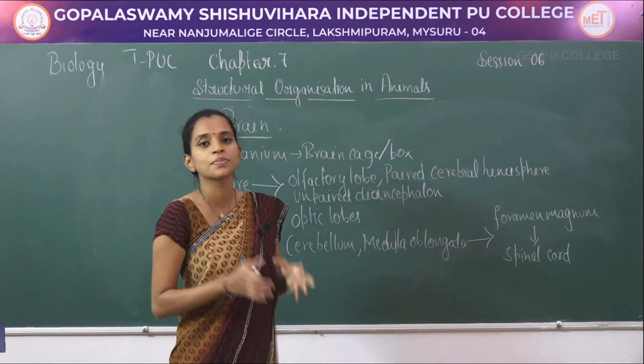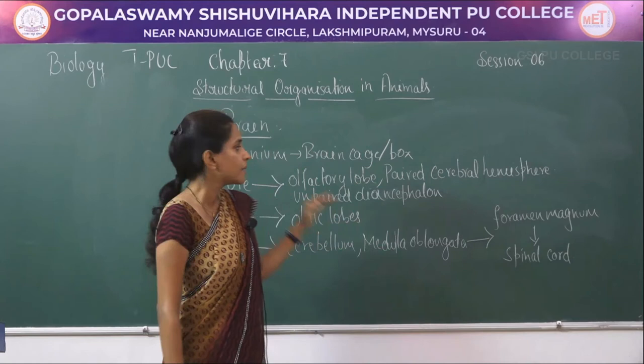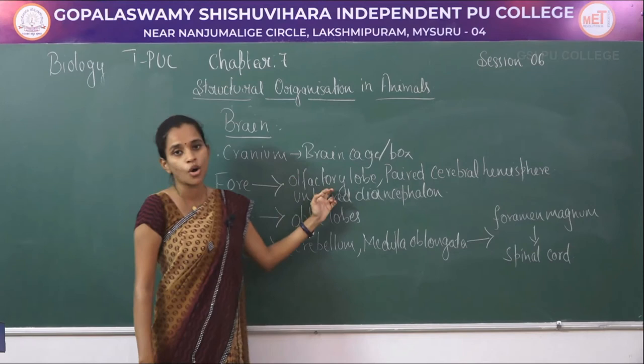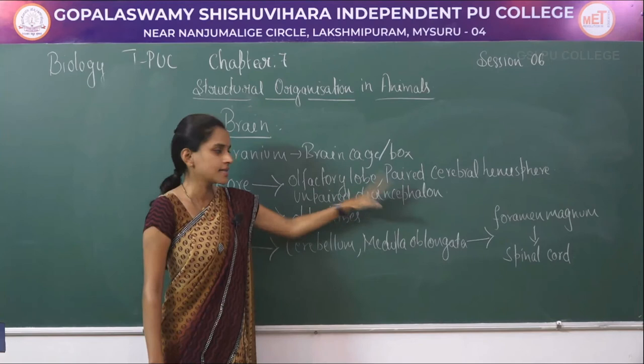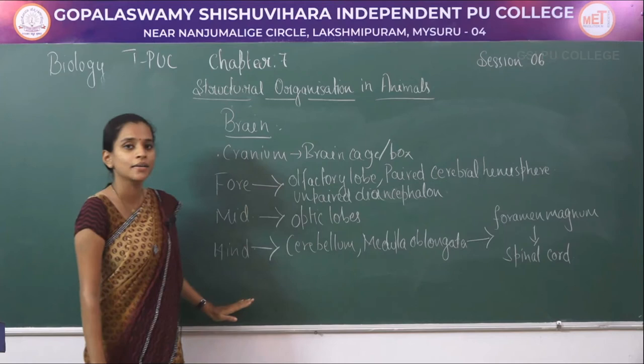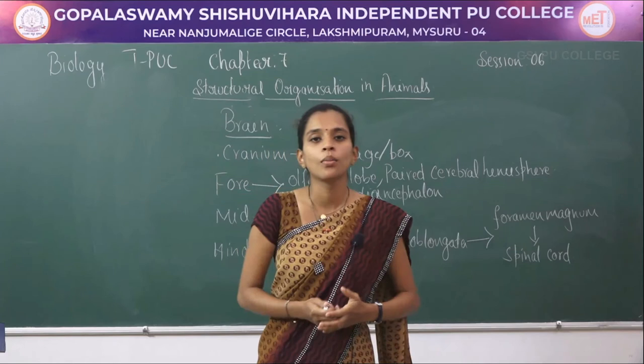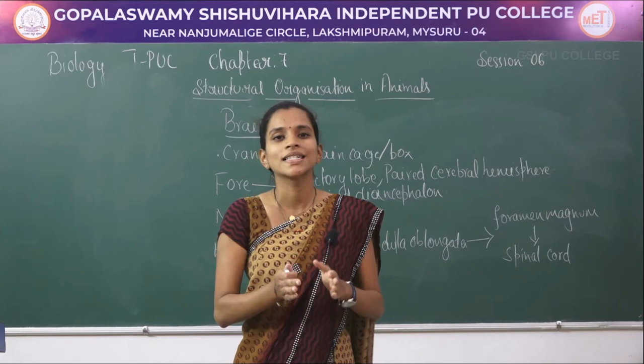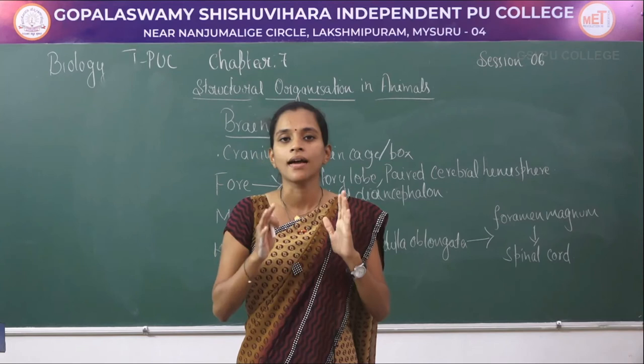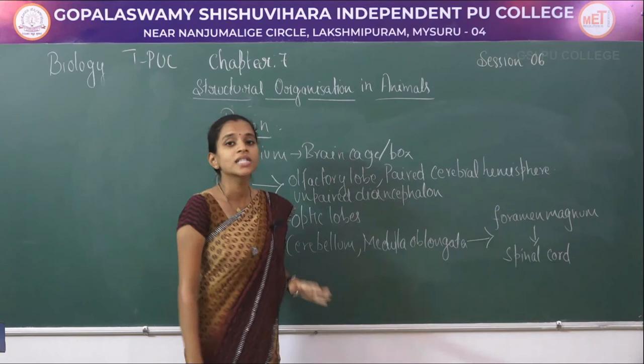The brain of the frog is protected within the brain cage called the cranium. It is divided into forebrain, midbrain, and hindbrain. The forebrain includes olfactory lobes, paired cerebral hemispheres, and unpaired diencephalon; the midbrain includes optic lobes; the hindbrain includes cerebellum and medulla oblongata. The medulla oblongata passes through the foramen magnum to form the spinal cord, which is protected within the vertebral column.